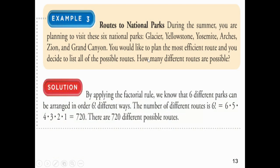During the summer you plan on visiting six national parks — Glacier, Yellowstone, and so forth — and you'd like to plan the most efficient route by listing all possible routes. Applying the factorial rule, six different parks can be arranged in 6 factorial different ways. You have six parks to choose first, then five left, then four, three, two, one — giving 720 different ways to arrange those six parks. The probability that you randomly select the fastest route is one over 720.